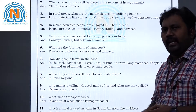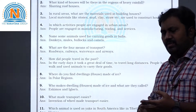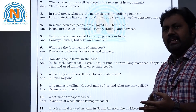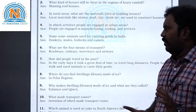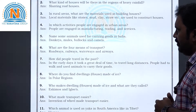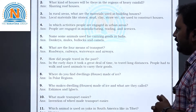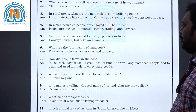Question 6: What are the four means of transport? The four means of transport are roadways, railways, waterways and airways.